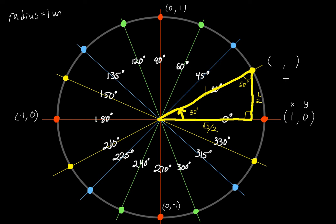This information is what allows us to get the coordinate points for the 30° angle. The x and y values represent how you travel from the center — or origin — to your point. The x value is the distance from the center to the right: that's √3/2. Then to go from the x-axis up to our point, we travel 1/2. So knowing that special right triangle gave us the coordinate points for the 30° angle.